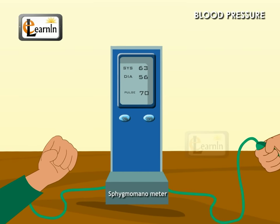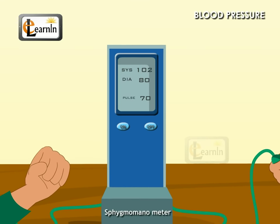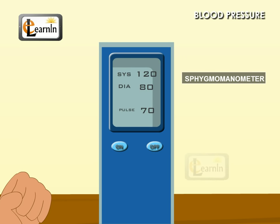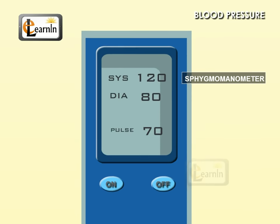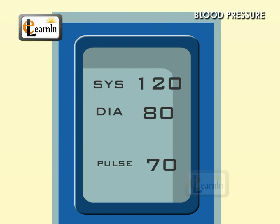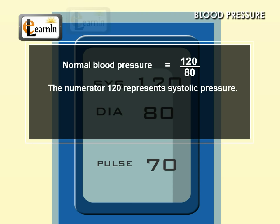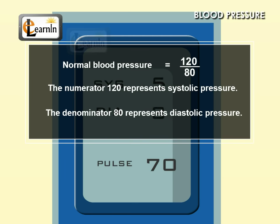Blood pressure is measured by doctors using an instrument called the sphygmomanometer. Blood pressure levels are written in the form of 120 by 80, which is normal blood pressure. The numerator 120 represents systolic pressure, and the denominator 80 represents diastolic pressure.